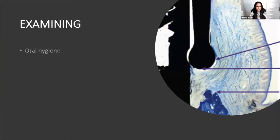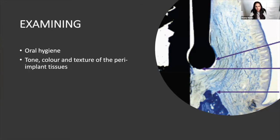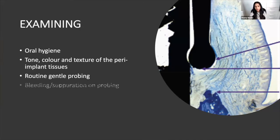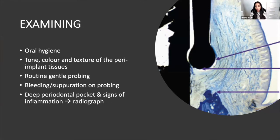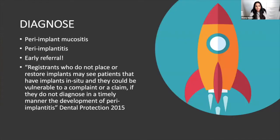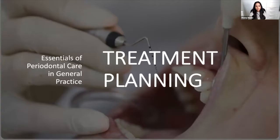Very briefly on implants during examination: treat implant patients like perio patients. Look at oral hygiene, color and texture of tissues, always probe gently — you can use a metal probe. Look for bleeding and separation. Take a radiograph to assess bone level. When you go out into practice, don't be scared of implants — you need to assess them. If there's a problem you don't have to treat it, but you must document it.